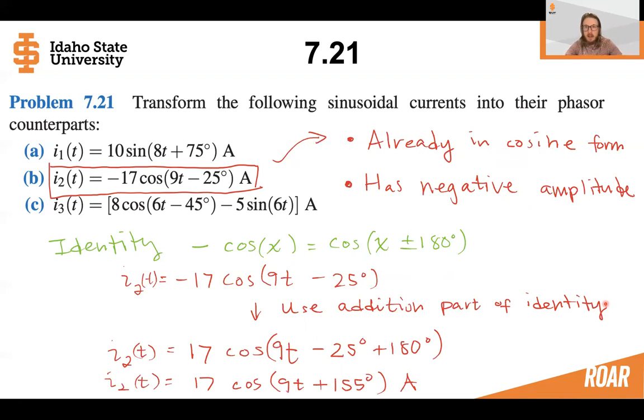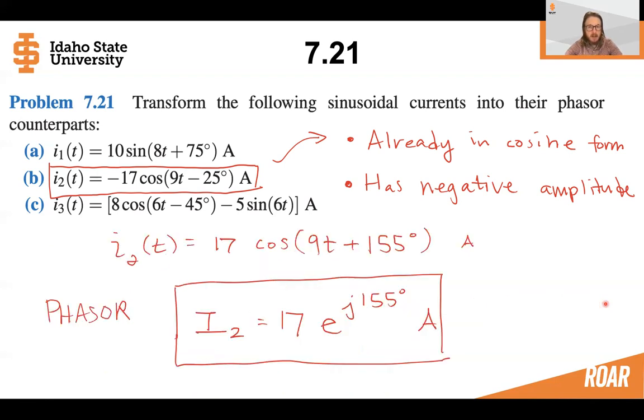Now, the main reason that we add as well is that we like to keep our phase angles typically between minus 180 and 180. This is what we get as the phasor for I2.